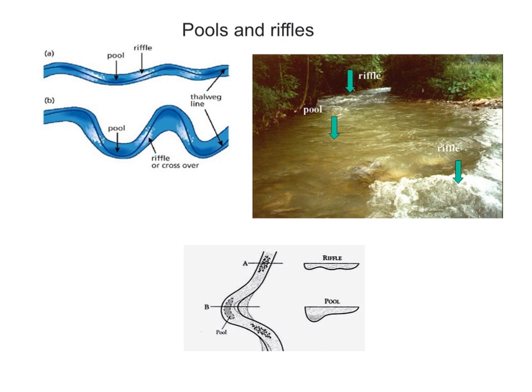And finally another feature of meanders is the presence of pools and riffles. Pools are simply deep areas of water on the outside bend and riffles are the places in between the pools and you can see them on the photograph to the right here.